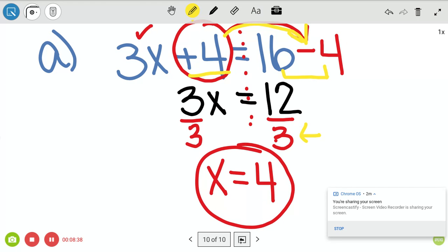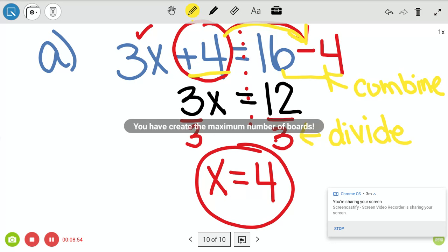And then we combine and divide. Combine and divide. So there we go. That's what we did here. And then here we combine. So we move our term over, combine and divide. And then we get our solution, x equals 4. Alright, let's try another one.